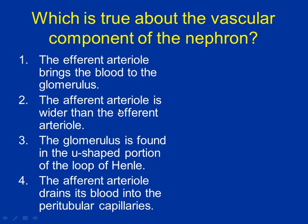Let's review the vascular component. Number one: 'The efferent arteriole brings blood to the glomerulus' — false. The efferent takes blood away from the major structure. Number two: 'The afferent arteriole is wider than the efferent' — true. Number three: 'The glomerulus is found in the U-shaped loop of Henle' — false; the glomerulus sits in Bowman's capsule. Number four: 'The afferent arteriole drains into the peritubular capillaries' — false; the efferent does that. The afferent drains into the glomerulus. So numbers one, three, and four are wrong; two is correct.